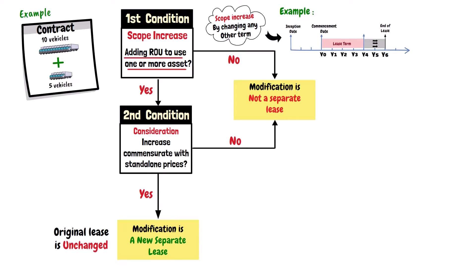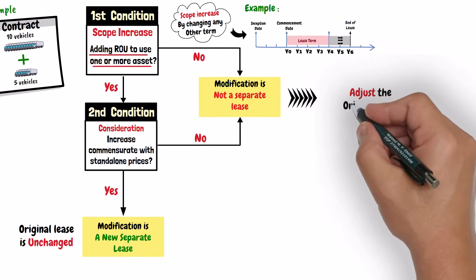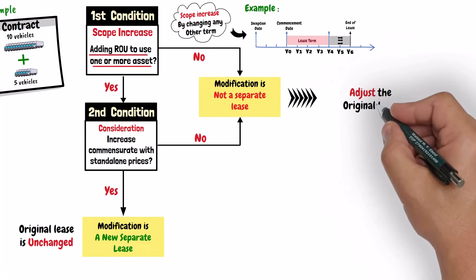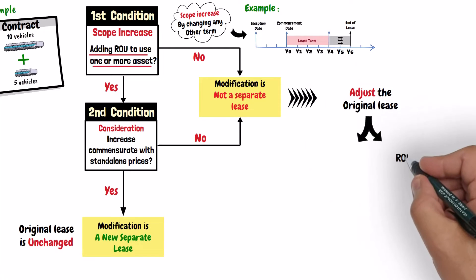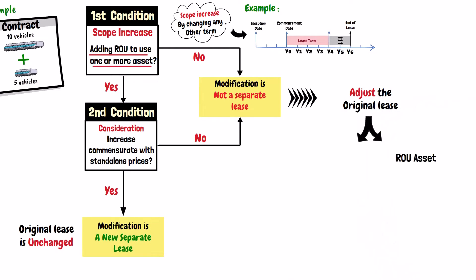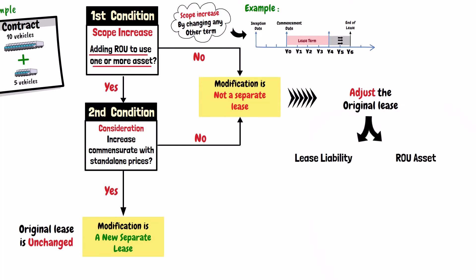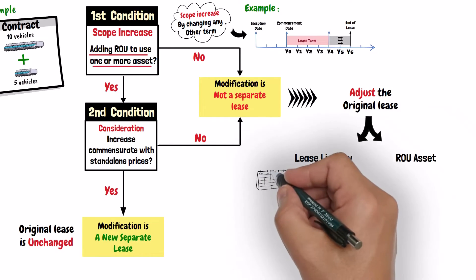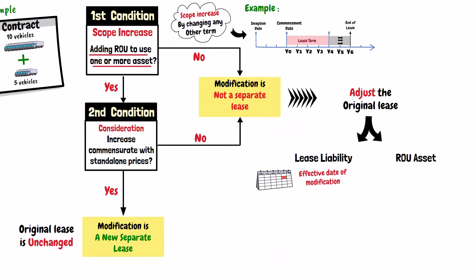If one of the conditions is not met, then the lease modification is not accounted for as a separate lease. Instead, the lessee should adjust the original lease for that modification — in other words, adjust the right-of-use asset and the lease liability of the original lease. The lease liability should be recalculated as of the effective date of modification, which is the date on which the modified contract was signed.